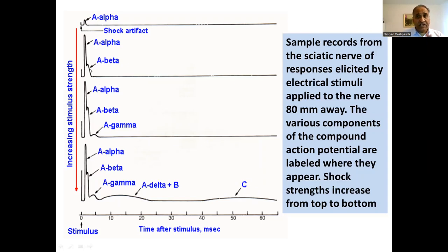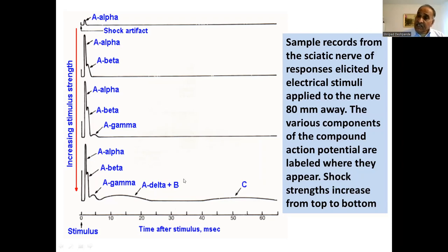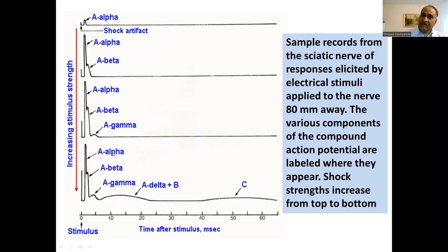This compound action potential was recorded by Erlanger and Gasser, wherein you have an A peak, B peak, and C peak. The B peak corresponds with A-delta fibers and is concerned with preganglionic autonomic fibers. The A peaks are divided into the fast-conducting alpha, then beta, then slower gamma, then delta. The slowest is the C fiber. A-delta is equivalent to B in terms of conduction velocity and diameter.